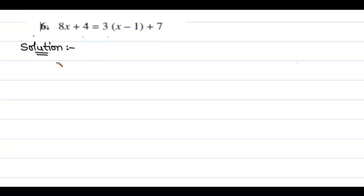Here we rewrite the given equation as 8x + 4 = 3(x - 1) + 7. We have to simplify the right-hand side by distributing 3 inside the bracket. That means we are distributing 3 to x and 3 to negative 1.